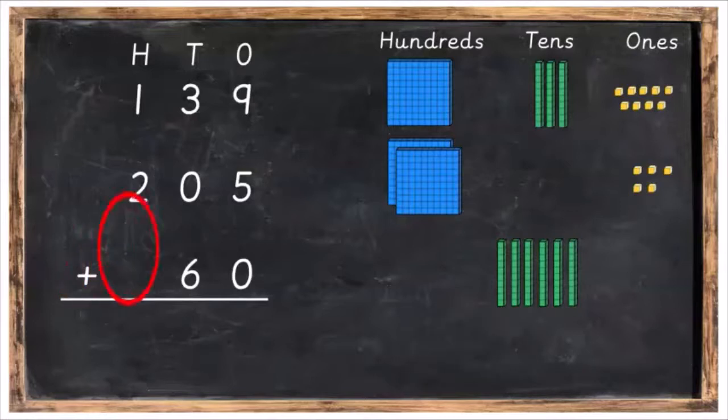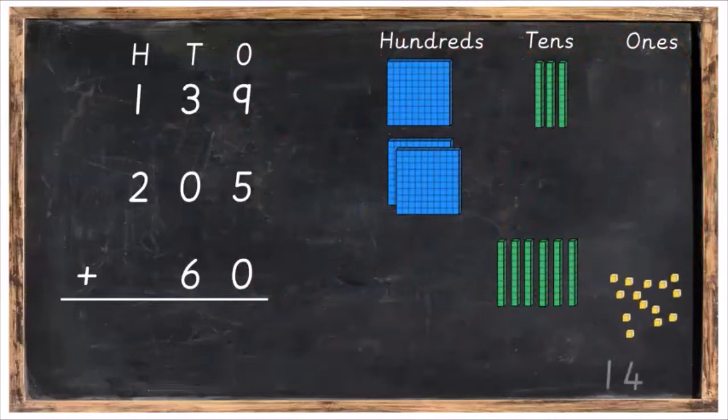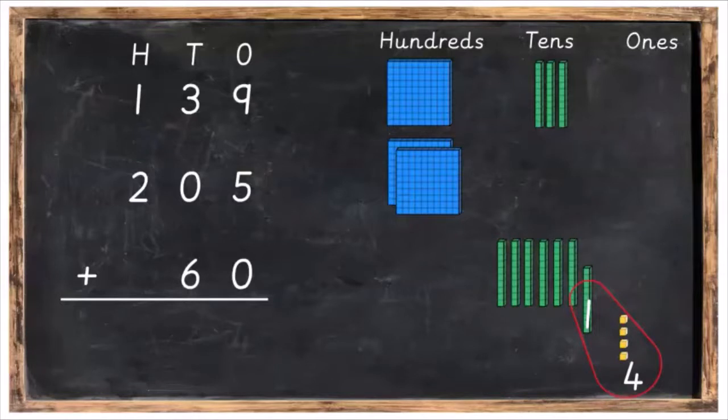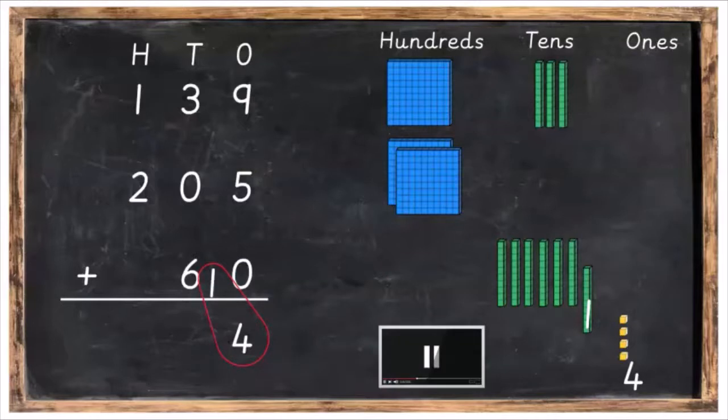We're going to start off by adding the ones first. So in the ones, we've got nine plus five plus zero, which is equal to 14. Now, what is 14? Well, 14 is actually equal to one ten and four ones. And that ten doesn't belong in the ones column. We can either move the ten into the tens column just like that, or we can swap it for a green ten and then move it over into the tens column where it belongs. So we're going to put down our four and carry over the one. Then we're going to move back over to our sum, write down the four and carry over the little one. Press pause, and when you're ready, press play again.